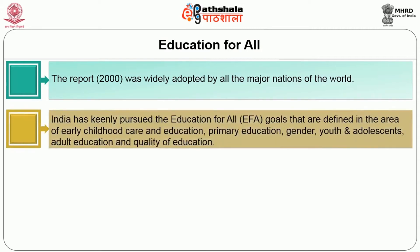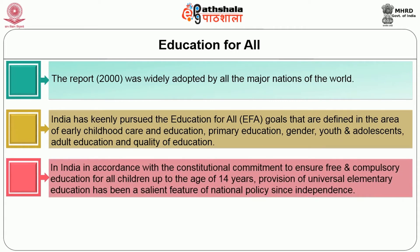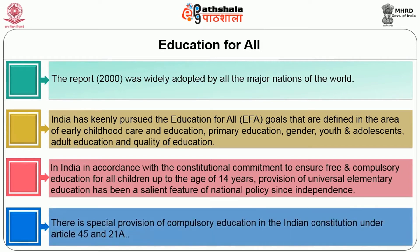India has keenly pursued the Education for All goals, defined in the areas of early childhood care and education, primary education, gender, youth and adolescence, adult education, and quality of education. In India, in accordance with the constitutional commitment to ensure free and compulsory education for all children up to the age of 14 years, provision of universal elementary education has been a salient feature of national policy since independence. There is a special provision of compulsory education in the Indian Constitution under Article 45 and 21A.